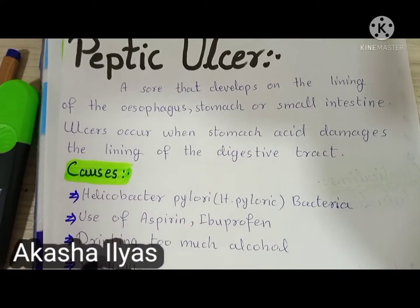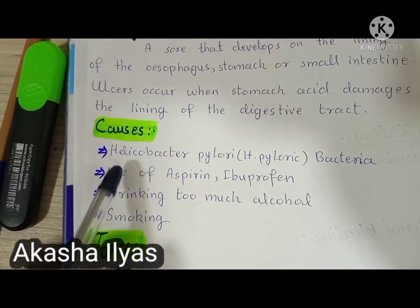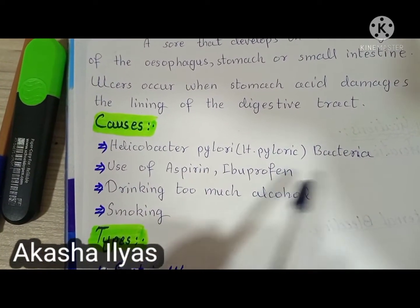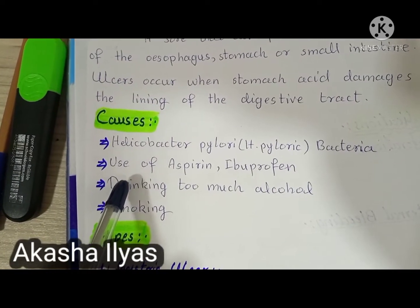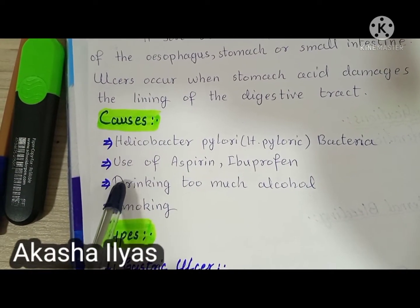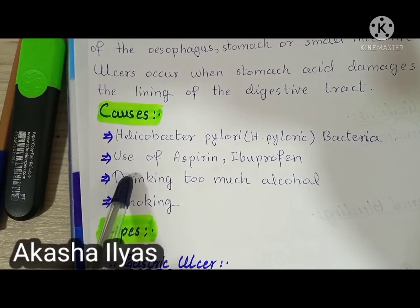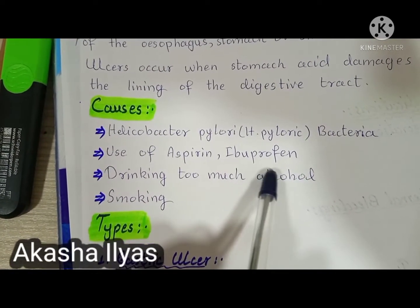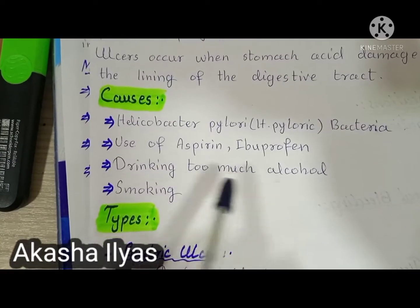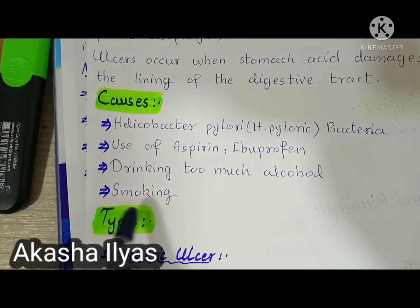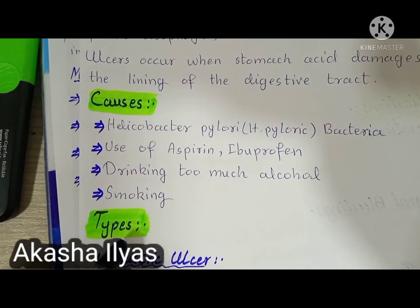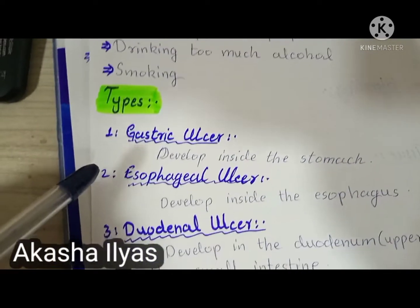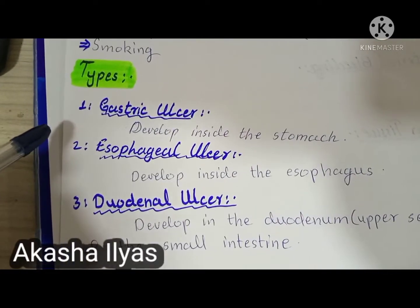The causes of peptic ulcers include Helicobacter pylori, a bacteria that may cause damage to the wall of the stomach or other digestive tract organs. Other causes include excessive use of aspirin or ibuprofen, drinking too much alcohol, or smoking.